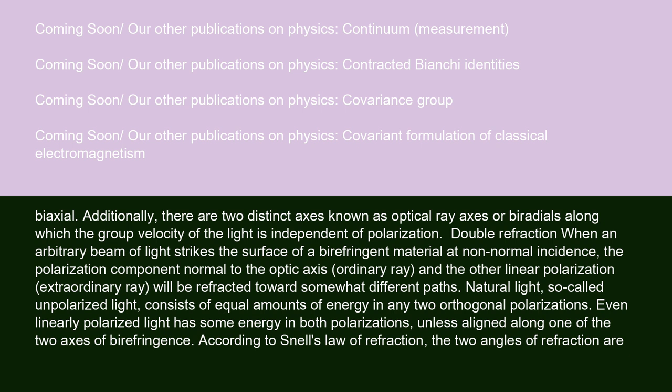When an arbitrary beam of light strikes the surface of a birefringent material at non-normal incidence, the polarization component normal to the optic axis — the ordinary ray — and the other linear polarization — the extraordinary ray — will be refracted towards somewhat different paths. Natural light, so-called unpolarized light, consists of equal amounts of energy in any two orthogonal polarizations. Even linearly polarized light has some energy in both polarizations, unless aligned along one of the two axes of birefringence.